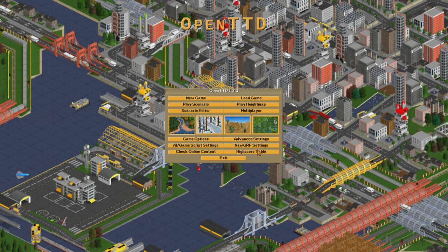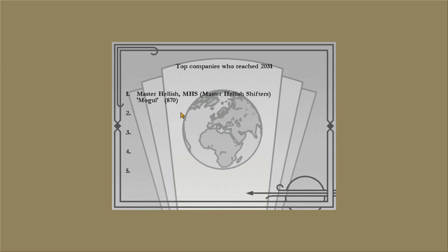The high score table is somewhere you can have a look at to see what people on this computer have reached by 2051. As you can see, I've reached 2051 once — there I am, top of the leaderboard. That was my first Let's Play series, so if you want to check that out, look at my channel and look for my Let's Play series.